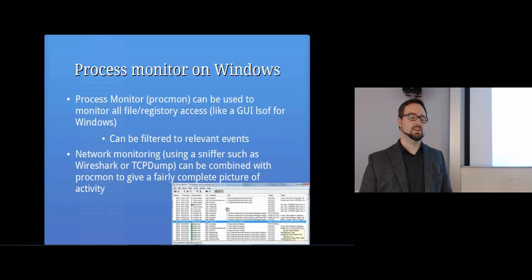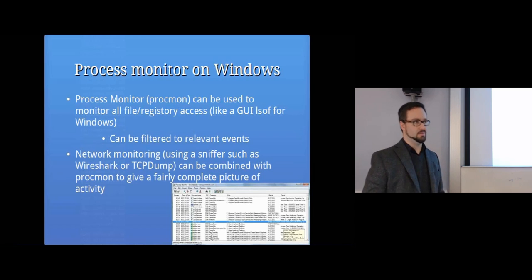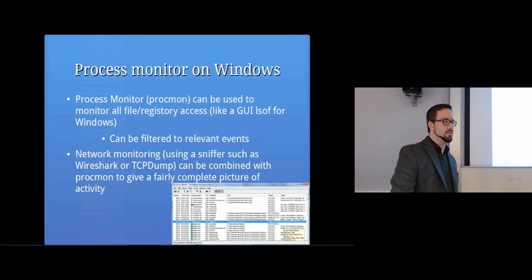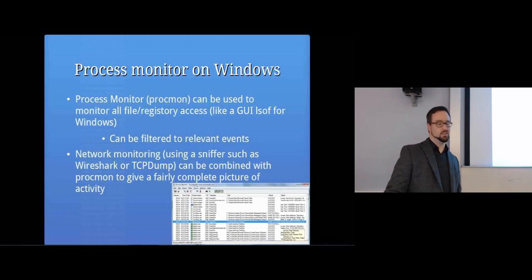A lot of programs hide things in the registry in really obscure places. There are some places you'd look first - for example on Windows, there's the run key: HKCU\Software\Microsoft\Windows\CurrentVersion\Run. Under that there's the list of programs that start when the computer starts. A lot of malware will insert itself there, but that's quite obvious. There are a lot more obscure places in the registry where things can get hidden.